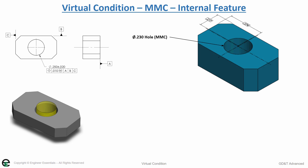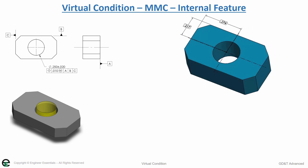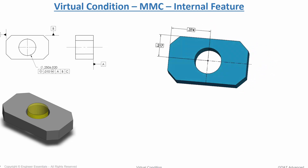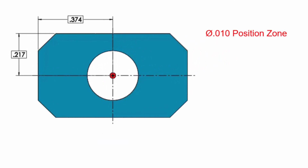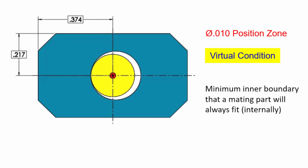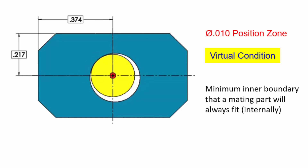The virtual condition is established from the maximum material condition. In this case, .230 is the max material condition size. We're given .010 position, and now our virtual condition is this inner limit that the part can never cross.